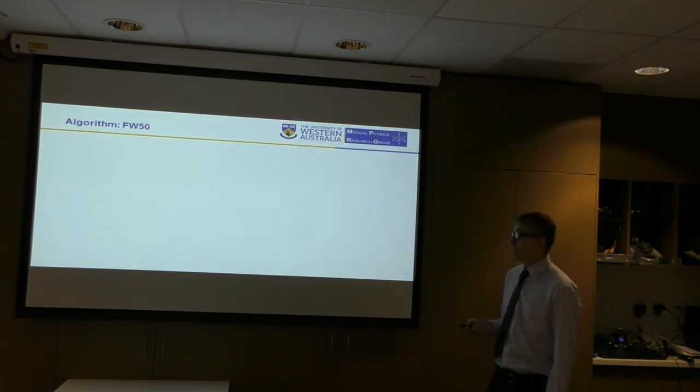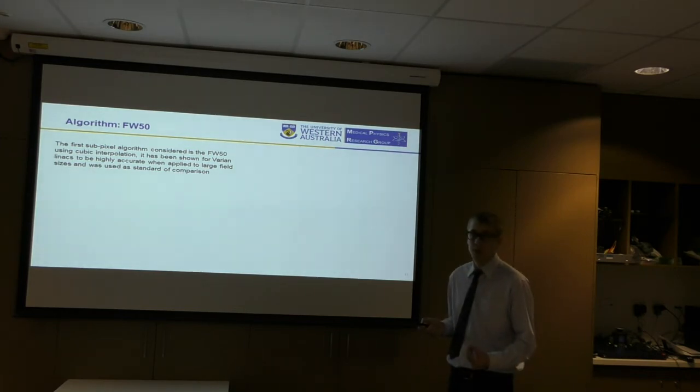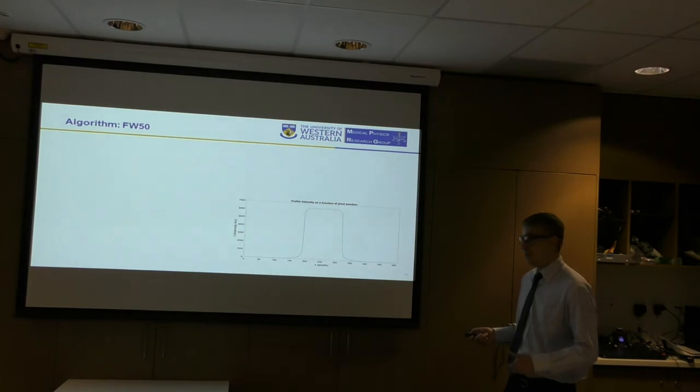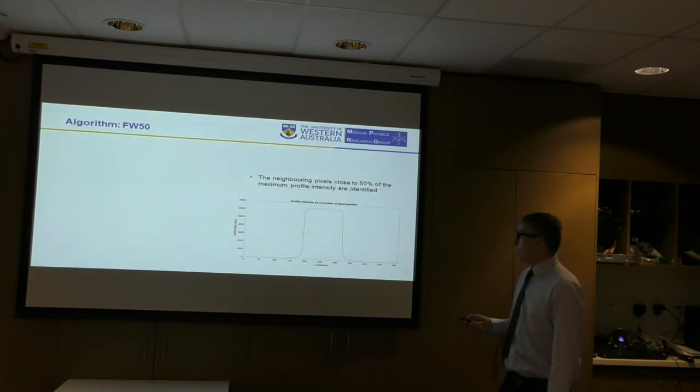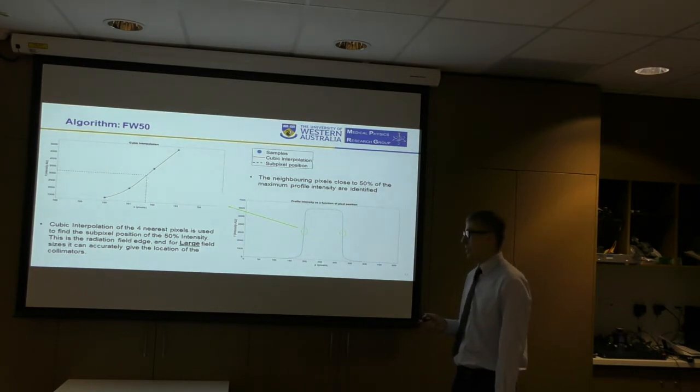The first algorithm I'll introduce is a standard full width at half maximum using cubic interpolation. This has been shown to be highly accurate for Varian maps when applied to large field sizes, and was used as a standard of comparison to which the other algorithms can be compared. How does it work? Here's a transverse profile. It's an average profile over the region of interest I was describing. The x-axis is the distance along the profile, or the pixels, and here we've got the intensity, which has arbitrary units. The neighboring pixels close to the 50% of maximum profile intensity are identified. Cubic interpolation of the four nearest pixels on each side is then used to find the sub-pixel location of the 50% intensity. This is the radiation field edge, and like I said, the large field sizes can accurately give the location of the collimators.